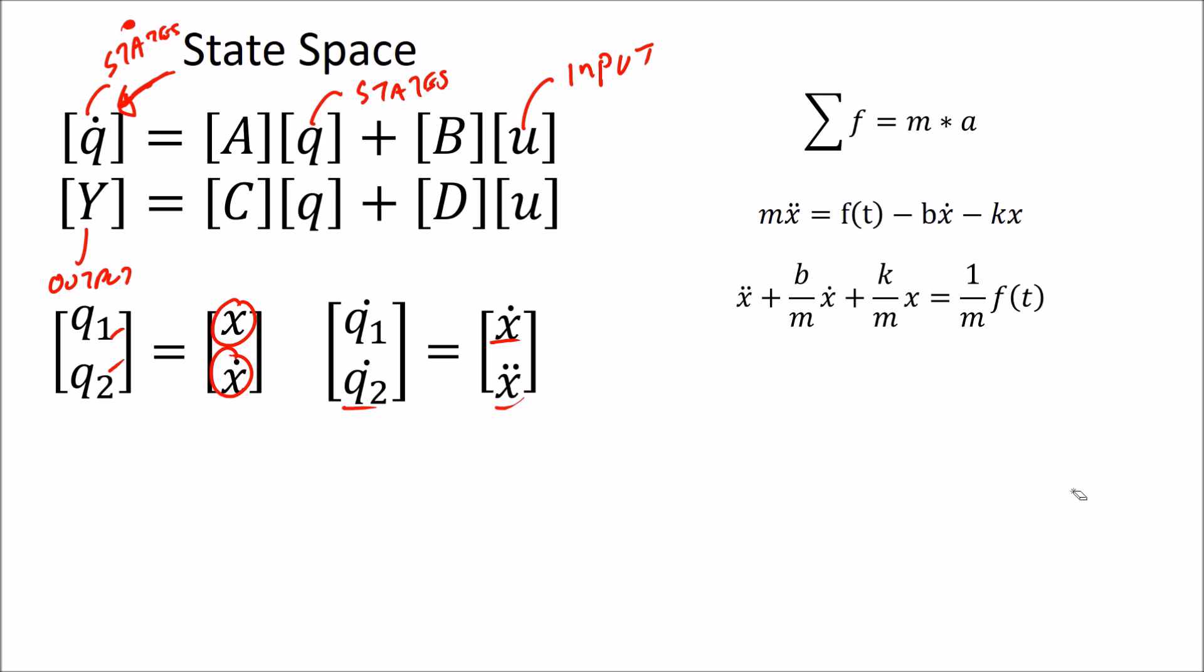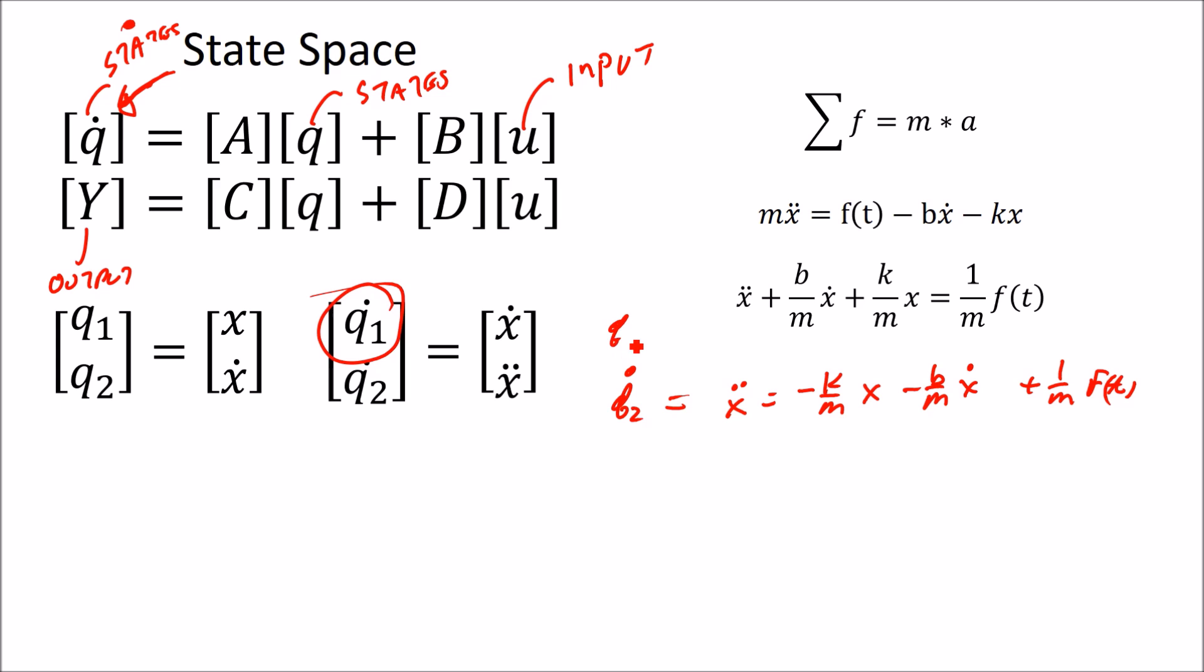So I can rewrite my equations a little bit. I can say that, well, if I take, let's solve for x double dot here. x double dot equals minus k over m times x minus b over m x dot plus 1 over m f(t). That's just rearranging a little bit. And my x double dot, I said, is q2 dot. Okay, expression for q1 dot is equal to, so that in our matrix form, it's 0 times x plus 1 times x dot plus 0 times f(t). And now all I have to do is write this out as a couple of matrices.